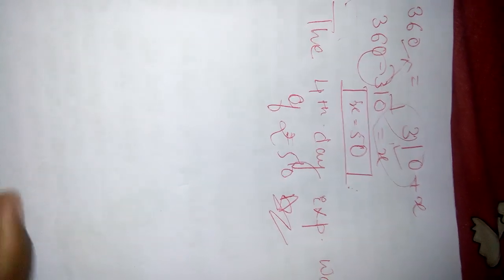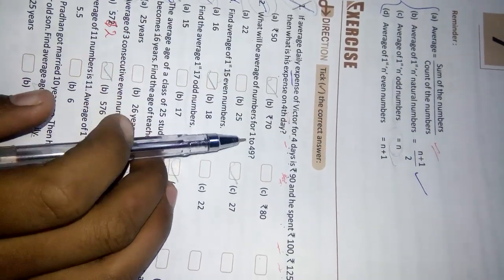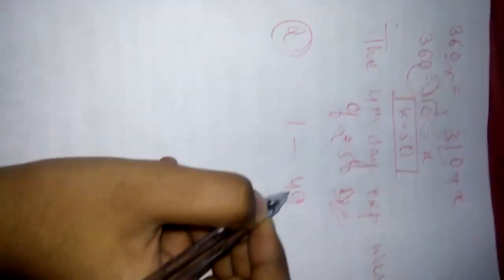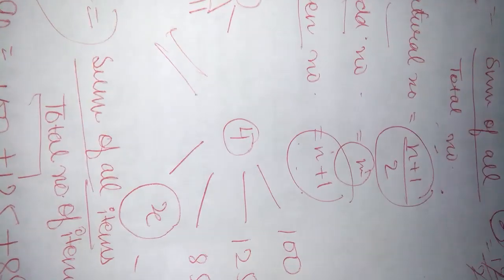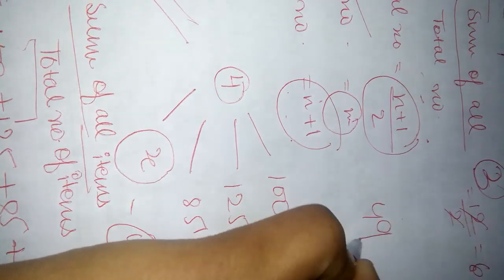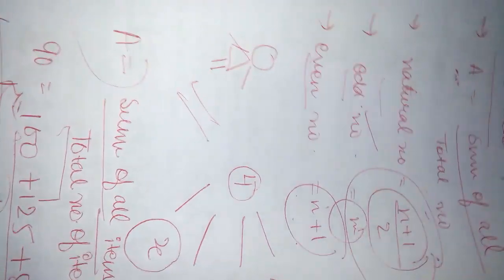Now we will do question number 2. The question is asking, what will be the average of numbers from 1 to 49? If you remember, I have taught you a formula over on the first page that was for natural numbers. 49 is a natural number. So this formula will be applied.